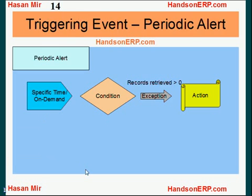Now let's talk about the triggering event for Periodic Alert. A Periodic Alert is not triggered by an update or insert on a specific table. Instead, it's a time-based alert, meaning it's triggered by the predefined schedule. For example, if you have defined a Periodic Alert to run every morning, it will be triggered when the time comes. You can also run a Periodic Alert on demand through a form available in Oracle Alert responsibility.